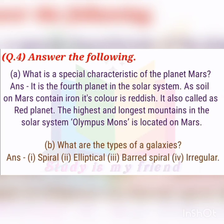Mars has the highest and the lowest mountain in the solar system. You have to write this answer for planet Mars. Part B: what are the types of a galaxy? There are four types of galaxies: spiral, elliptical, barred spiral, and irregular.